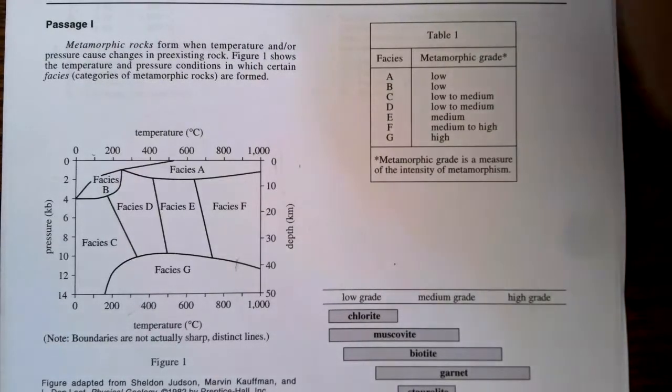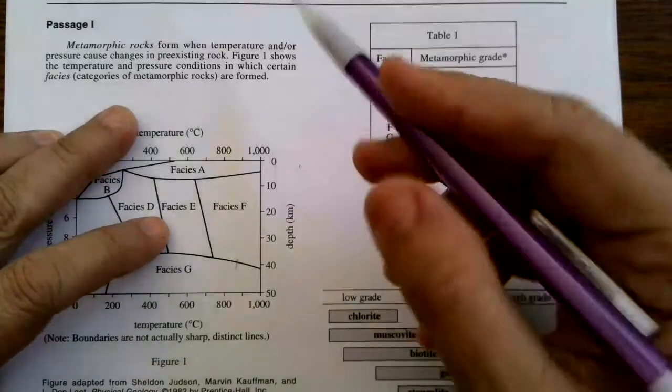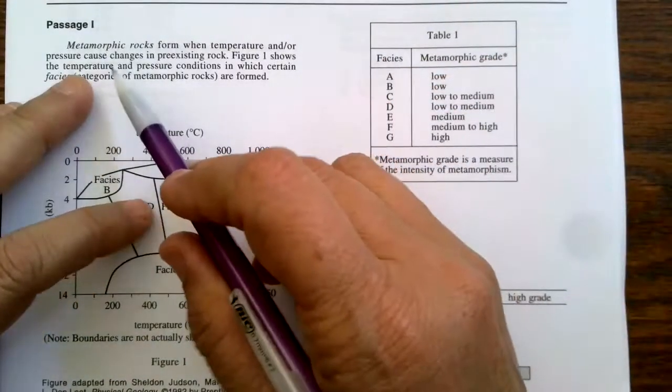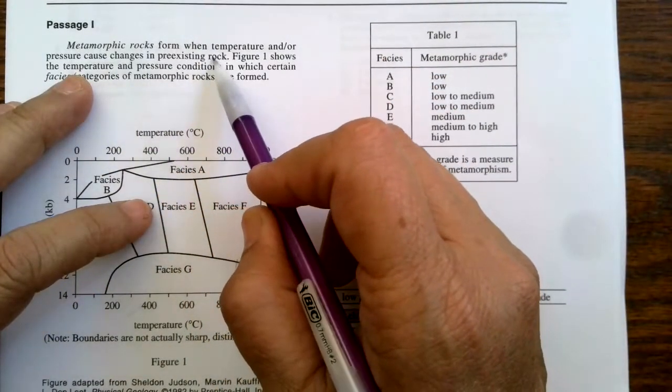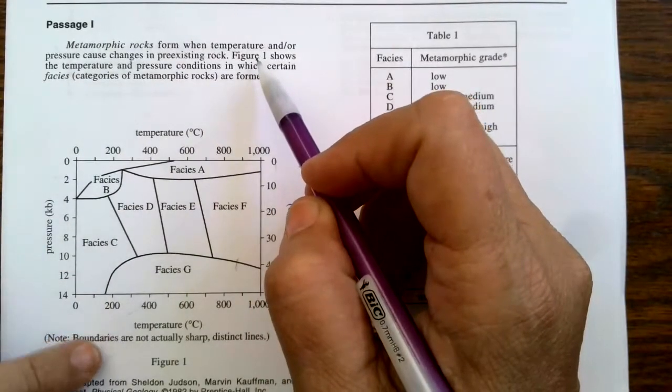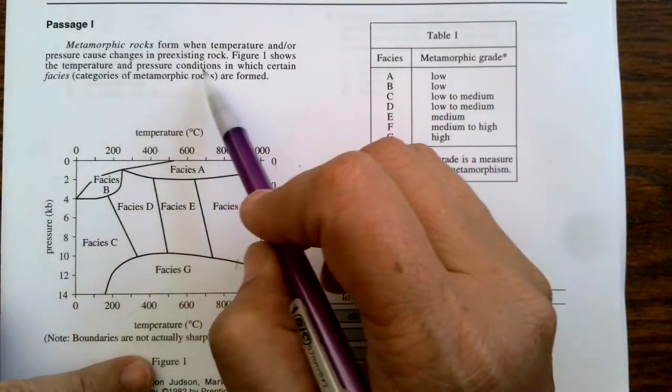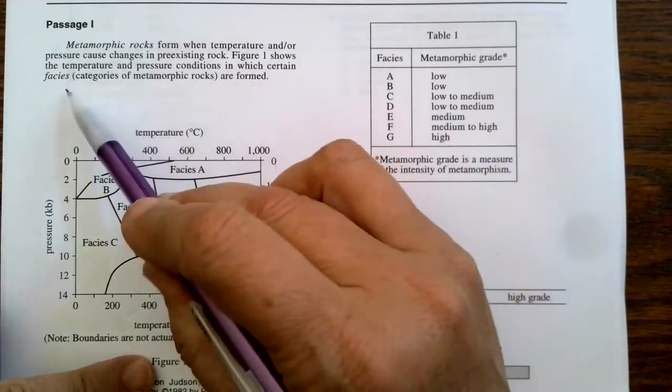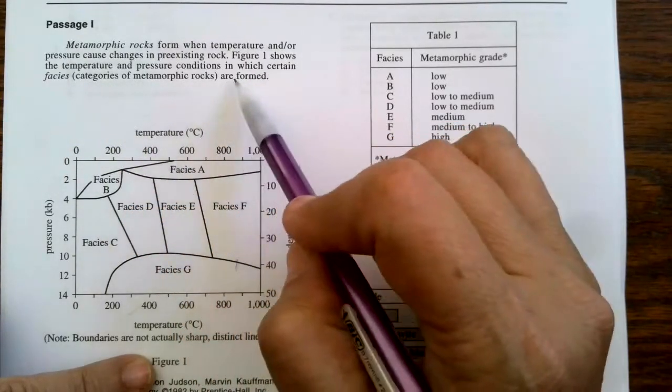Passage number one: Metamorphic rocks form when temperature and/or pressure cause changes in pre-existing rock. Figure one, that's here, shows the temperature and pressure conditions in which certain facies, categories, are formed.